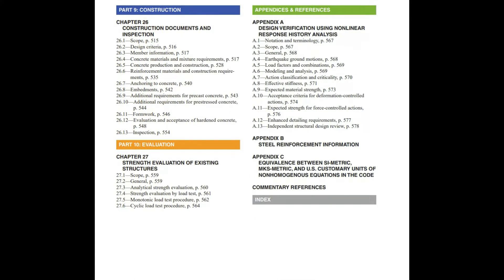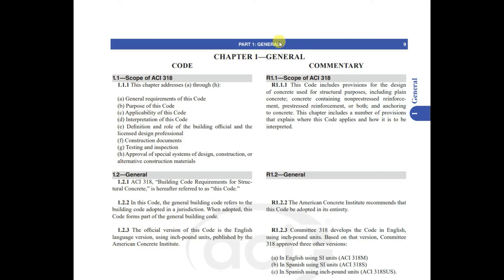Let's discuss all chapters one by one. In this video, let's focus on Chapter 1 — general requirements. Section 1.1 refers to the scope of ACI 318. This chapter addresses the following: general requirements of this code, purpose of this code, applicability of this code, interpretation of this code, definition and role of the building official and the licensed design professional.